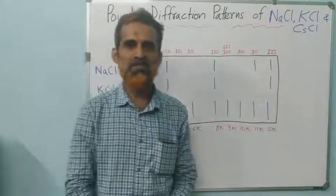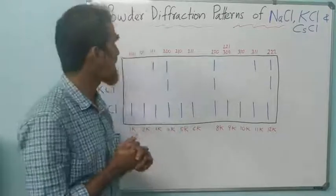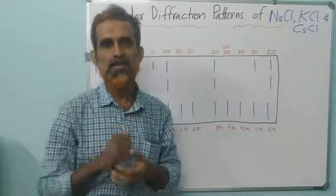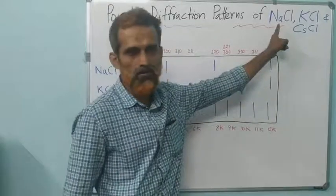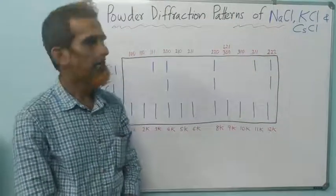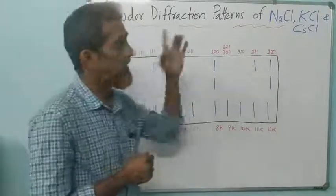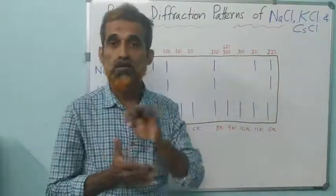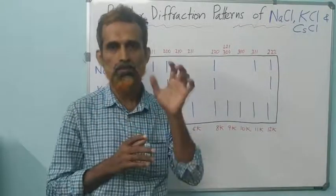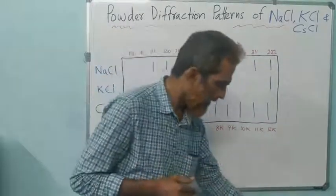Welcome dear students. In today's online class we discuss powder diffraction patterns of three selected crystals: sodium chloride, potassium chloride, as well as cesium chloride. In the previous class we discussed the powder diffraction pattern of the three types of cubic crystals or cubic lattices, that is primitive cubic, body-centred, as well as face-centred.